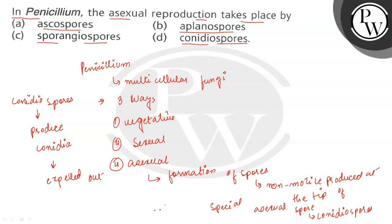We can say that the asexual reproduction takes place by the formation of spores, that is the conidiospores. The ascospores are seen in the sexual reproduction of Penicillium.